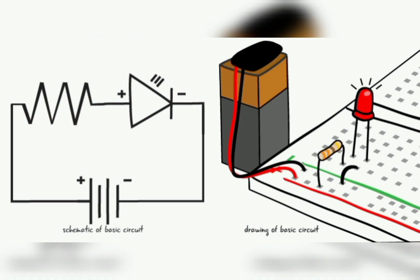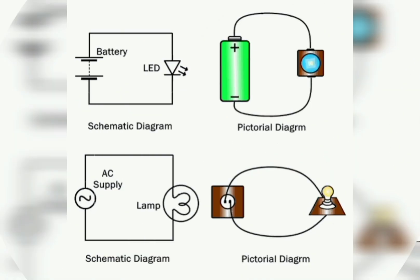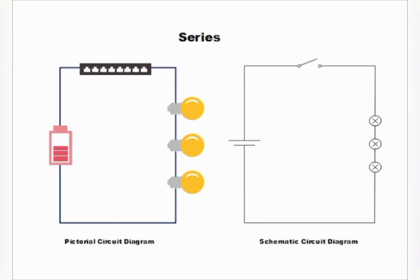A schematic diagram is different from a circuit diagram. A circuit diagram is also known as a pictorial diagram. We use schematic diagrams to help us understand, communicate, and troubleshoot our projects before we build them physically.